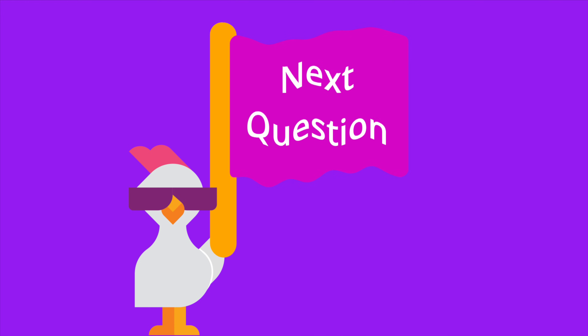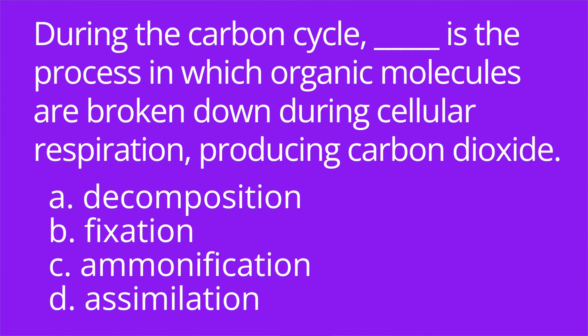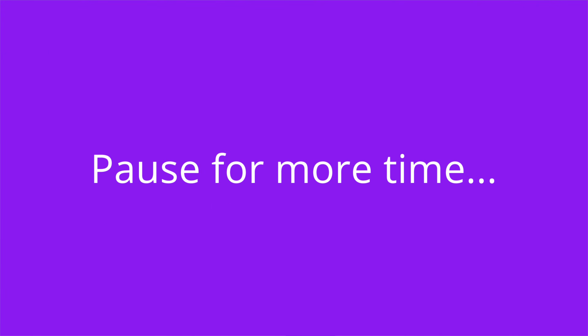Question number two. During the carbon cycle, blank is the process in which organic molecules are broken down during cellular respiration, producing carbon dioxide. A, decomposition. B, fixation. C, ammonification. D, assimilation. The answer is A, decomposition.